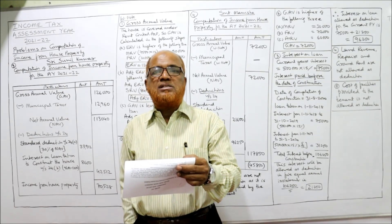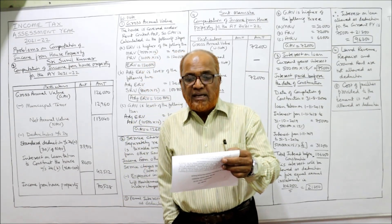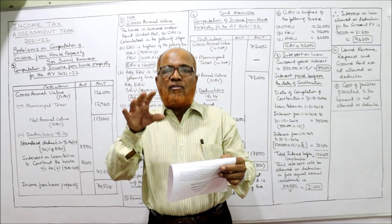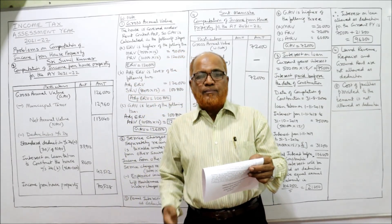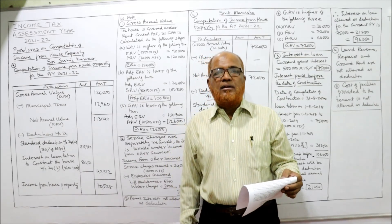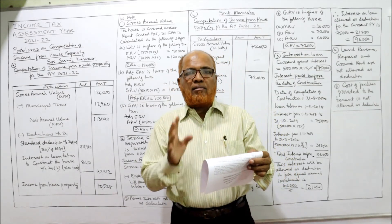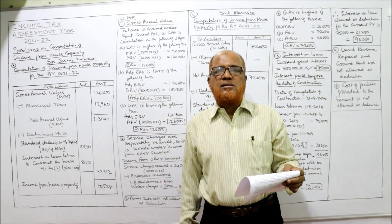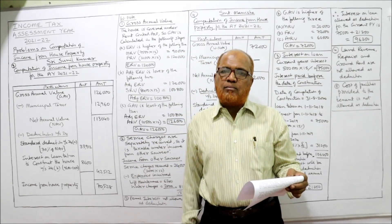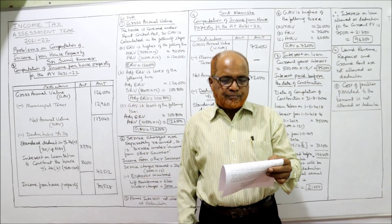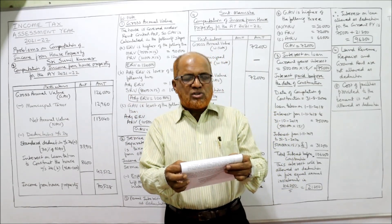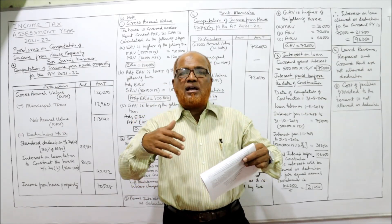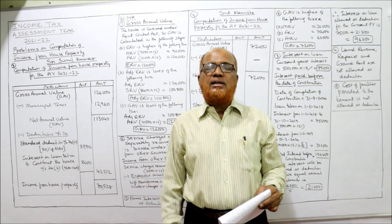Municipal rental value (MRV) is ₹7,500 per month. Fair rental value (FRV) of a similar house is ₹10,000 per month. Standard rent is ₹8,400 per month. The house is covered under the Rent Control Act, which is why standard rent is given. We calculate the GAV in three steps. The owner incurs local taxes (municipal taxes), lift maintenance, and water charges — these lift maintenance and water charges are services given by the owner to the tenant.